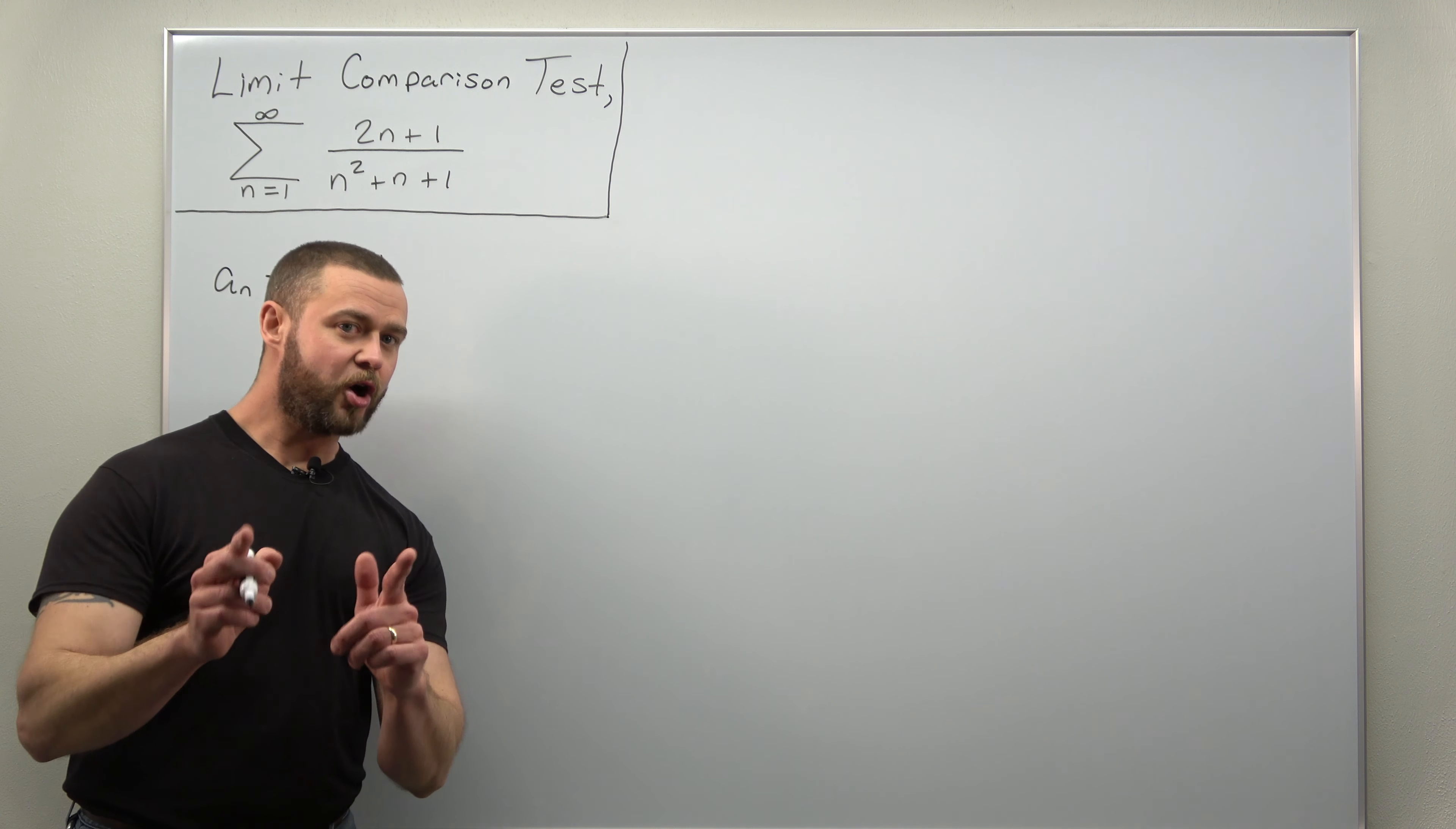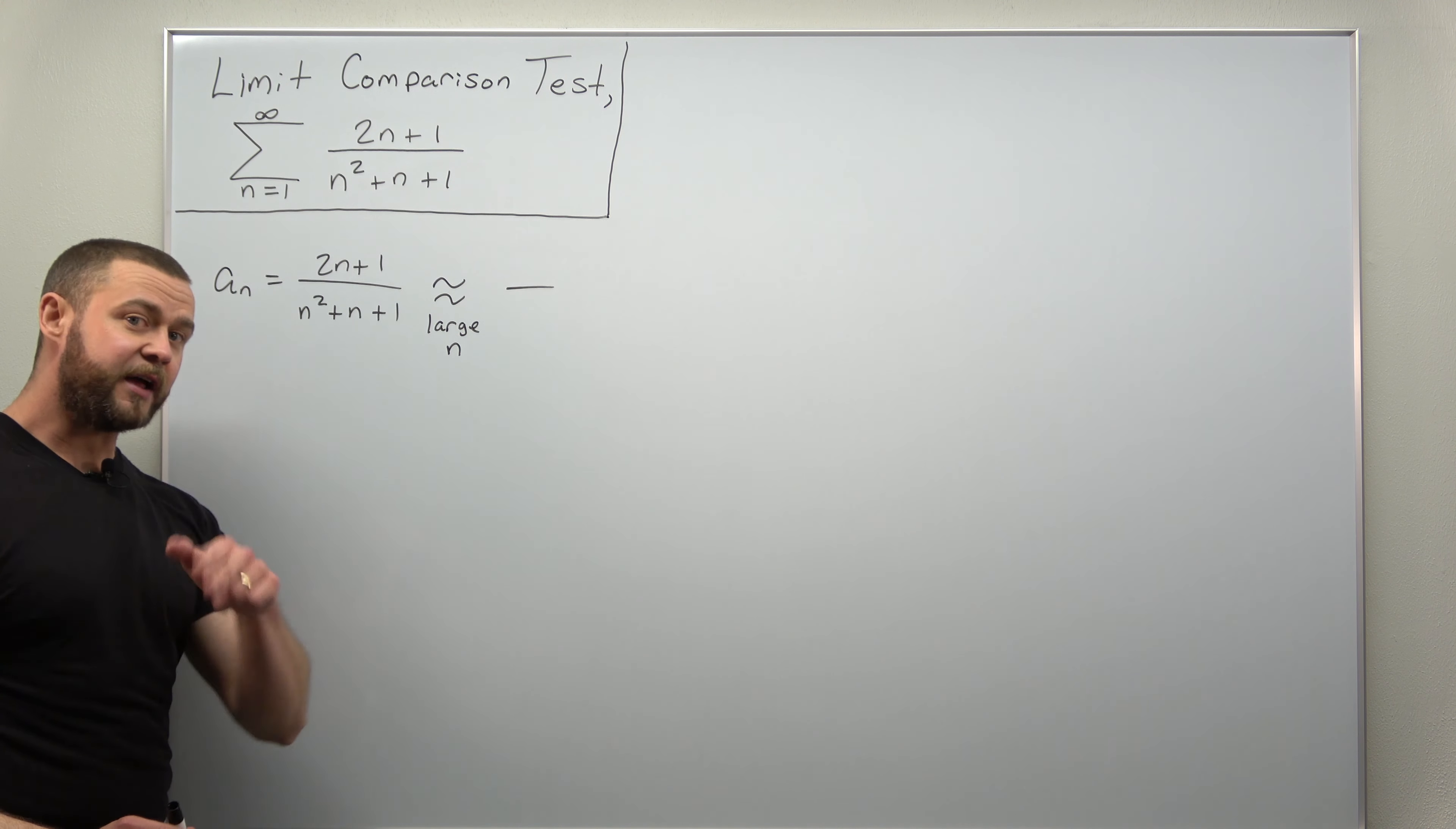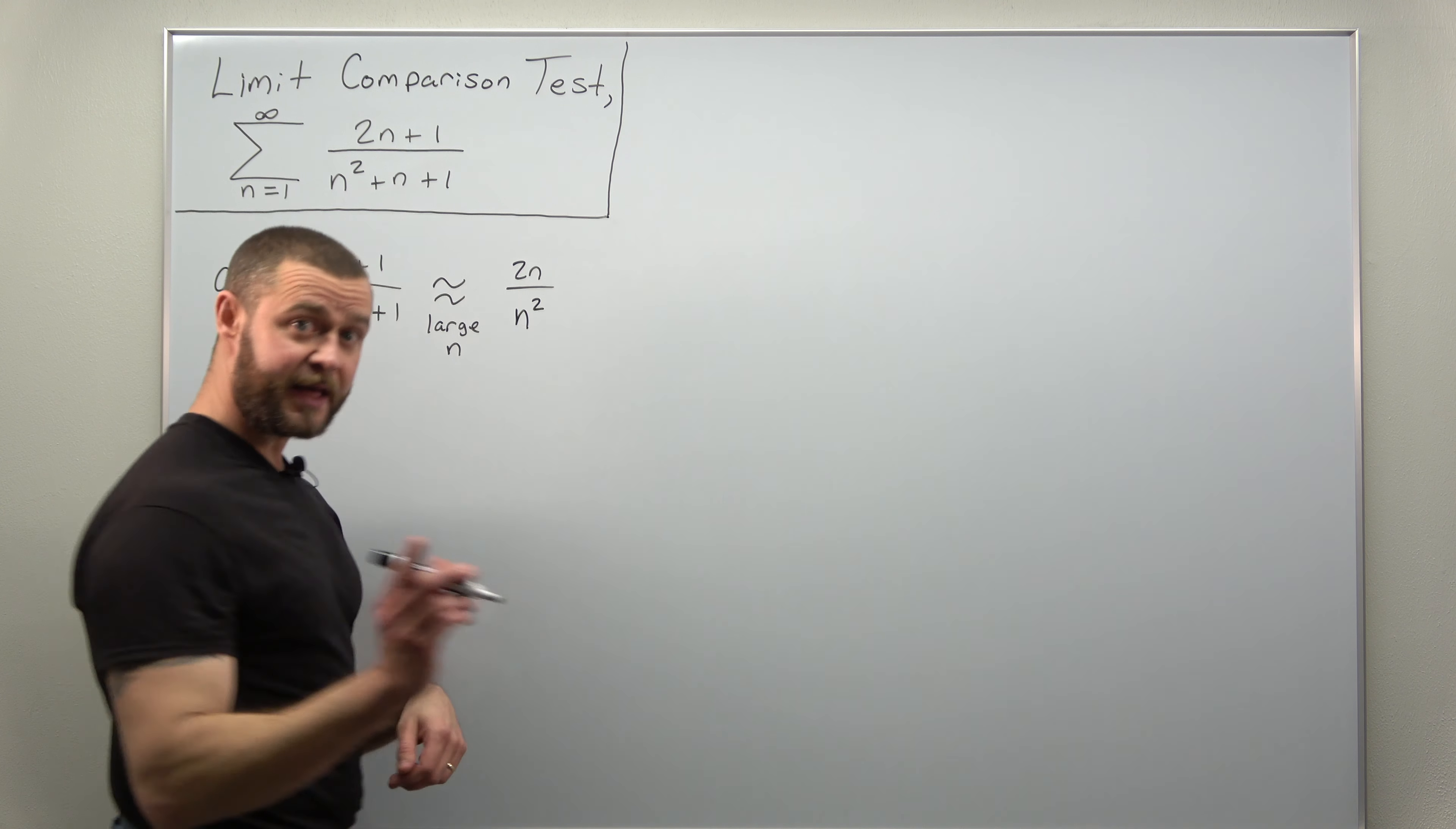We're going to go through a large n estimation to find the comparison term b_n. For large values of n in the numerator, that will behave like 2n since that's going to be much bigger than 1. In the denominator, the highest power dominates. In other words, n squared eventually becomes much bigger than just n and the plus 1. So our denominator behaves like n squared.